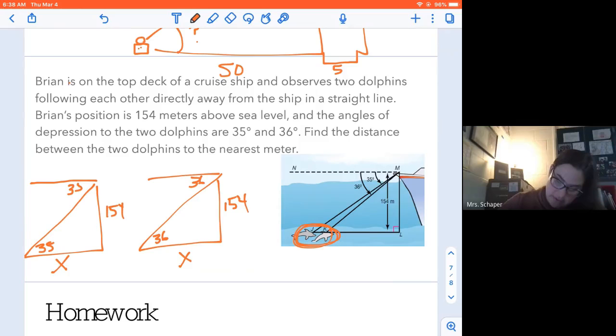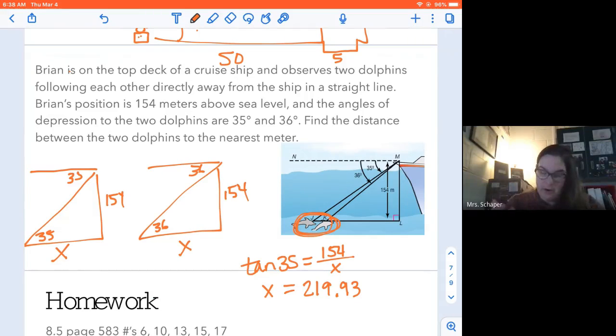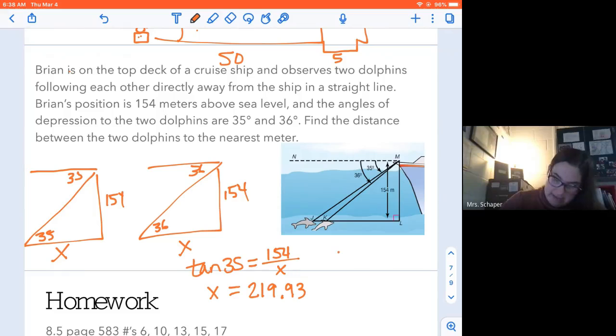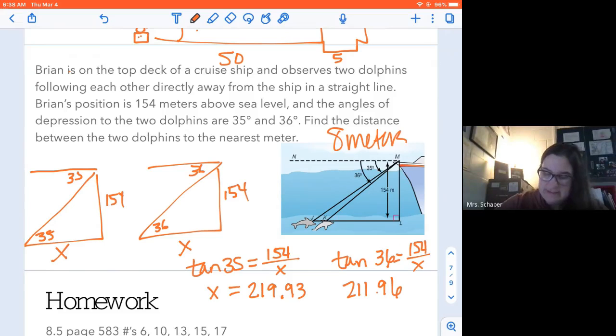So on the first one, I'm going to try to, let's see, opposite over adjacent. So the tangent of 35 is equal to 154 over X. So then X is equal to 154 divided by the tangent of 35, which is 219.93. I'm going to round for right now, just because then it helps me figure out the right answer. And then I'm going to shift this over a little bit. I'm going to take the tangent of 36 is 154 over X. So 154 divided by the tangent of 36 gives me 211.96. So they are eight meters apart. So this is really like a twofer. You have to answer two trig questions in one to get your final answer.